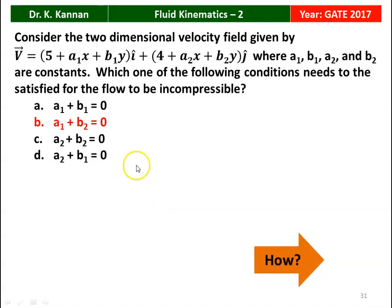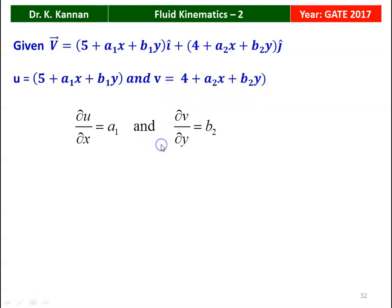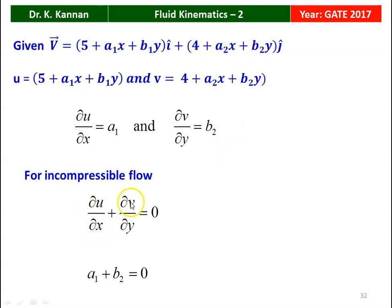We will see how. From the velocity vector, u = 5 + a1x + b1y and v = 4 + a2x + b2y. Differentiating: ∂u/∂x = a1 and ∂v/∂y = b2. For two-dimensional incompressible flow, ∂u/∂x + ∂v/∂y = 0, so substituting gives a1 + b2 = 0. This is the answer.